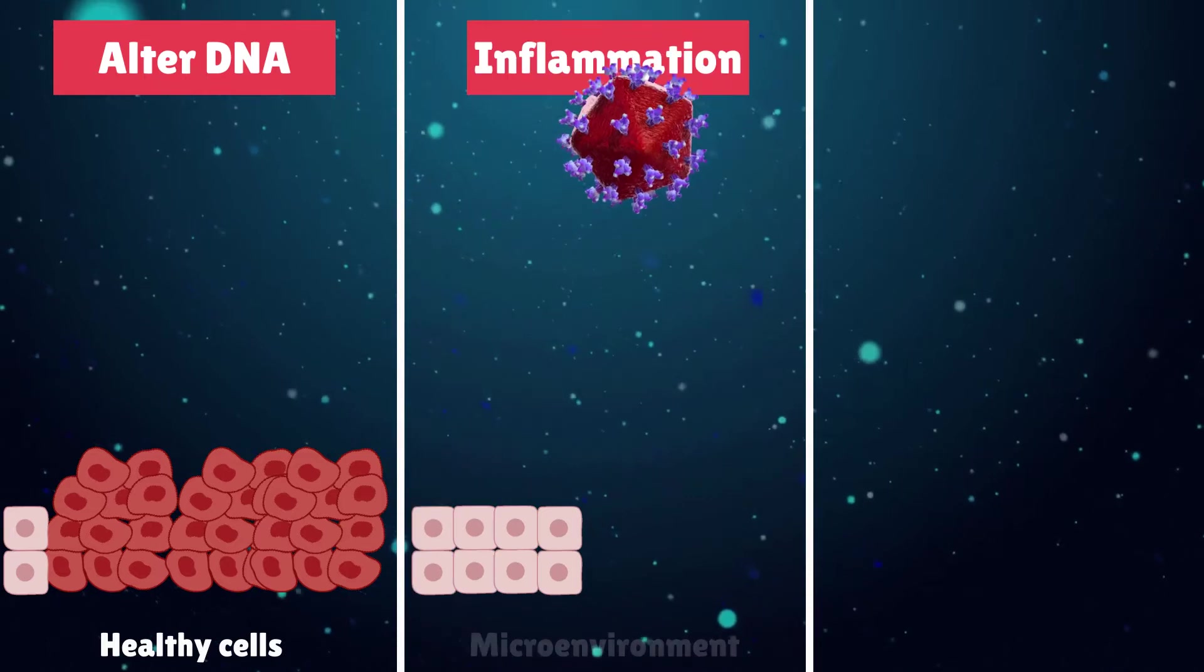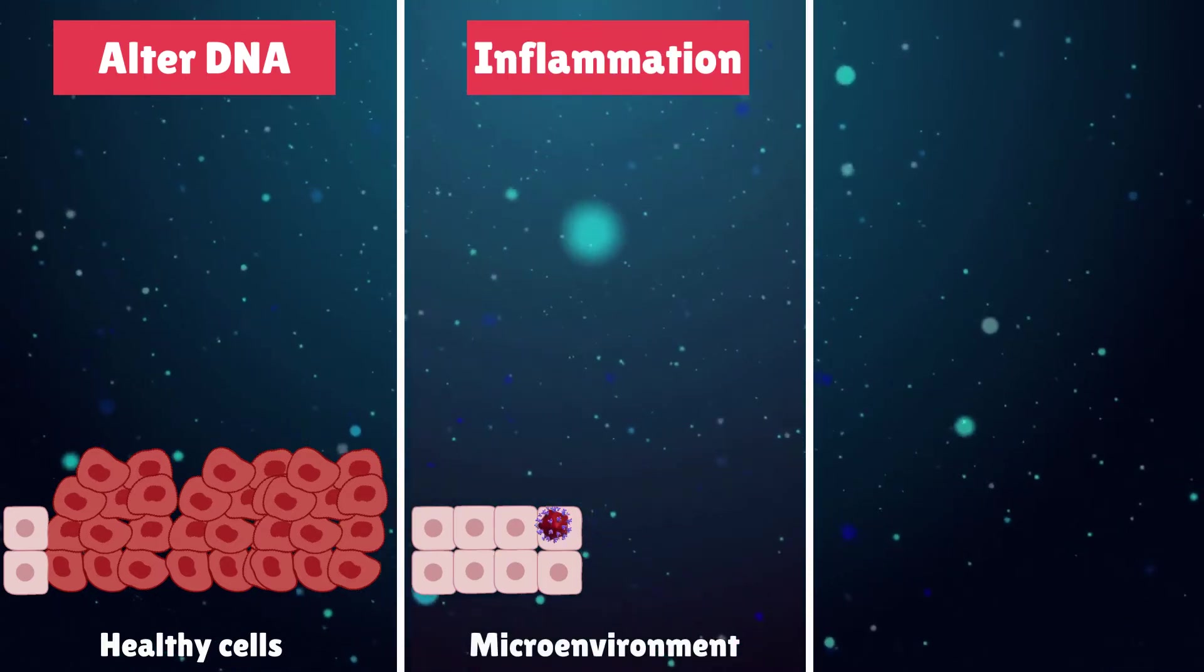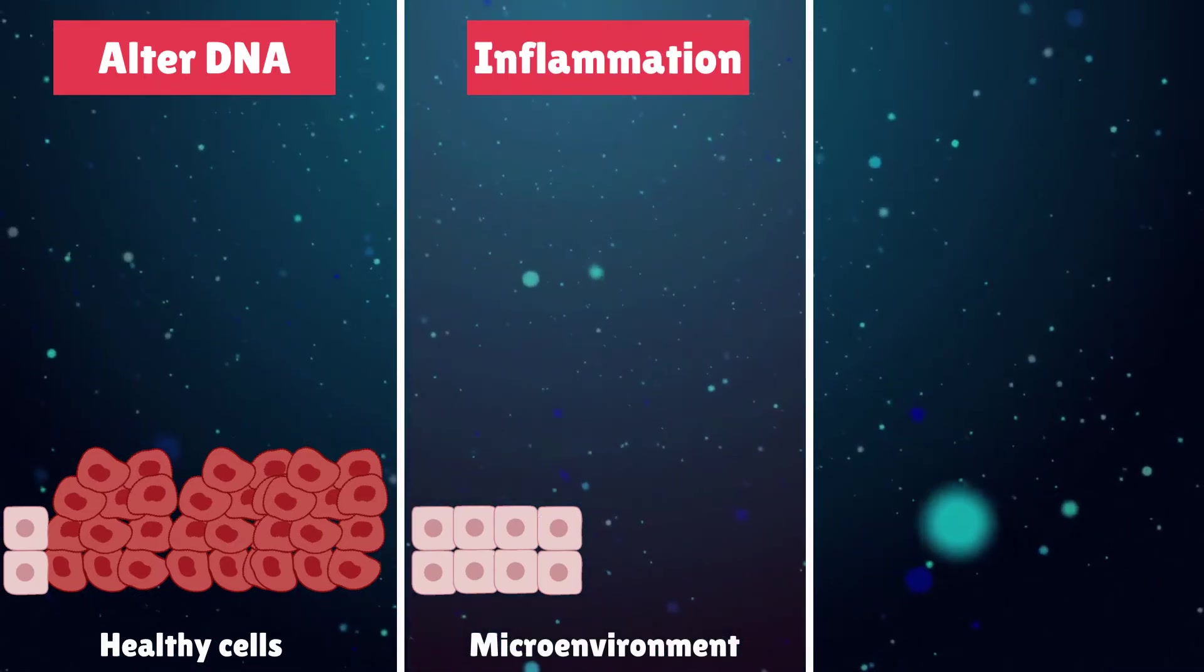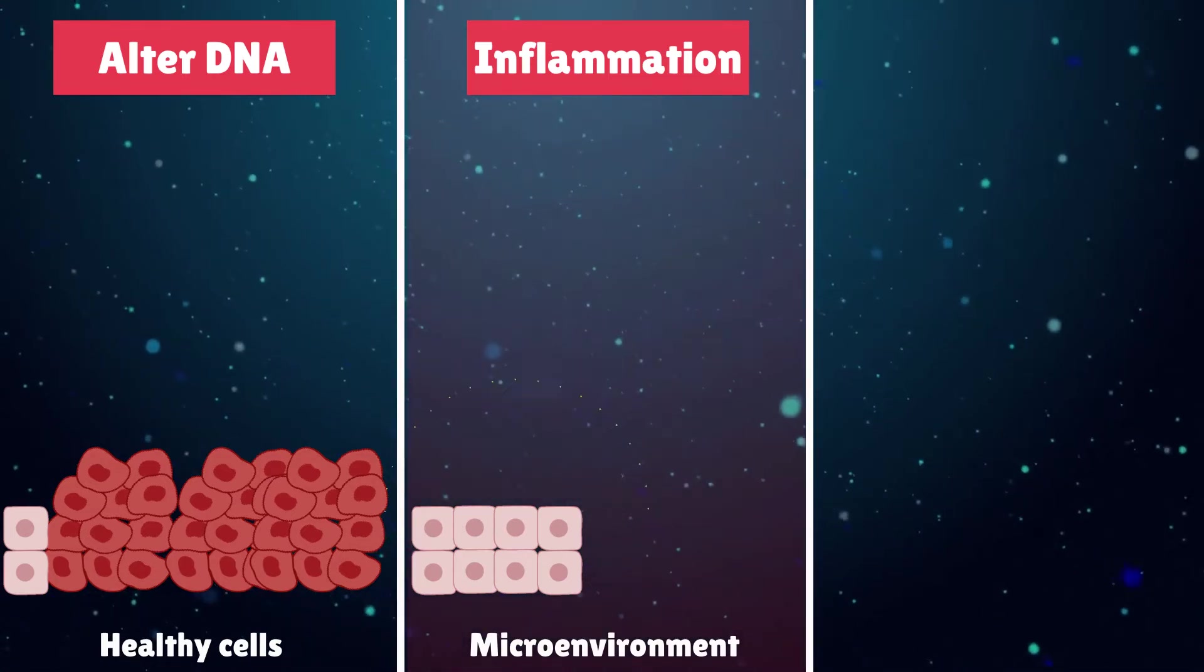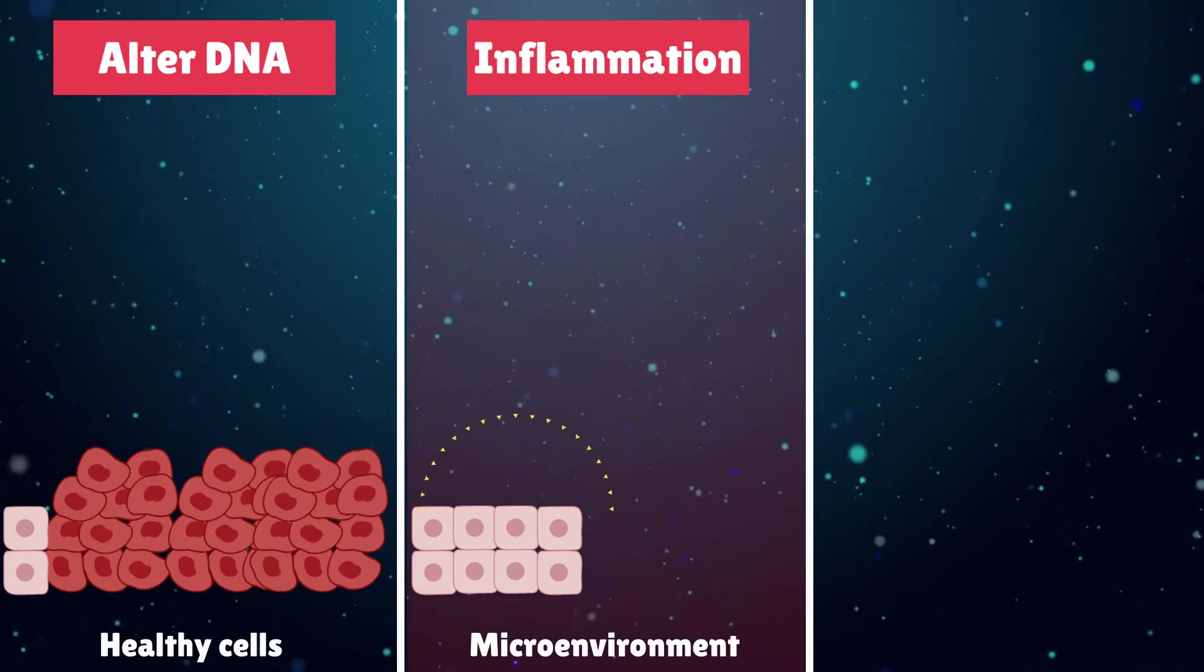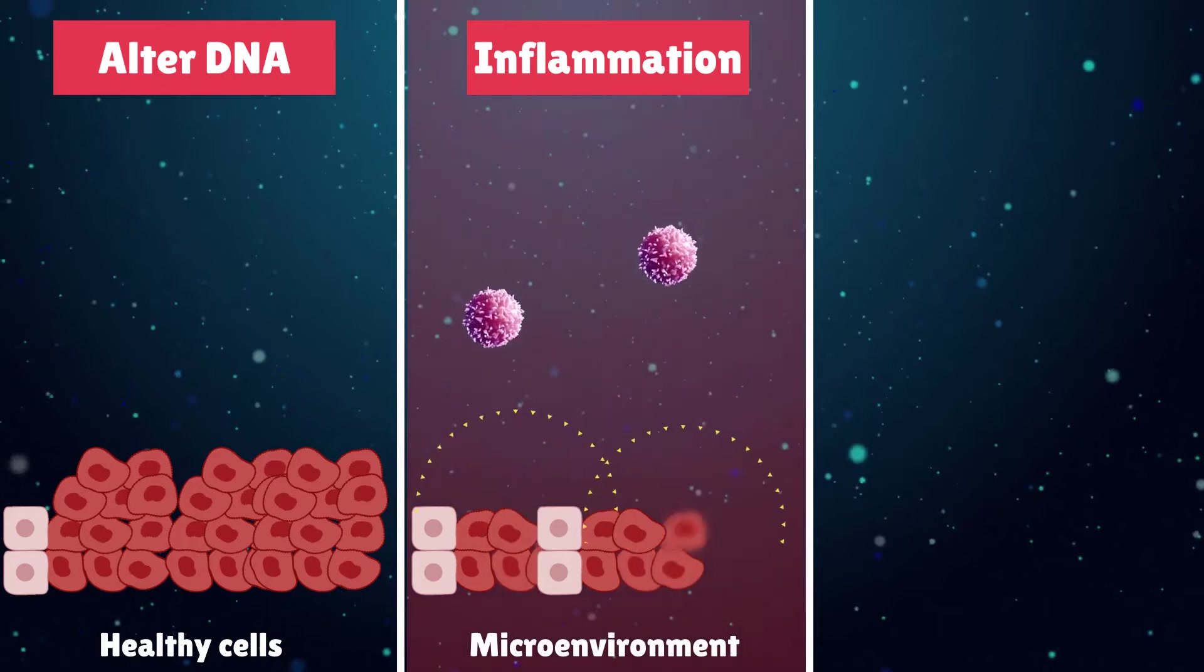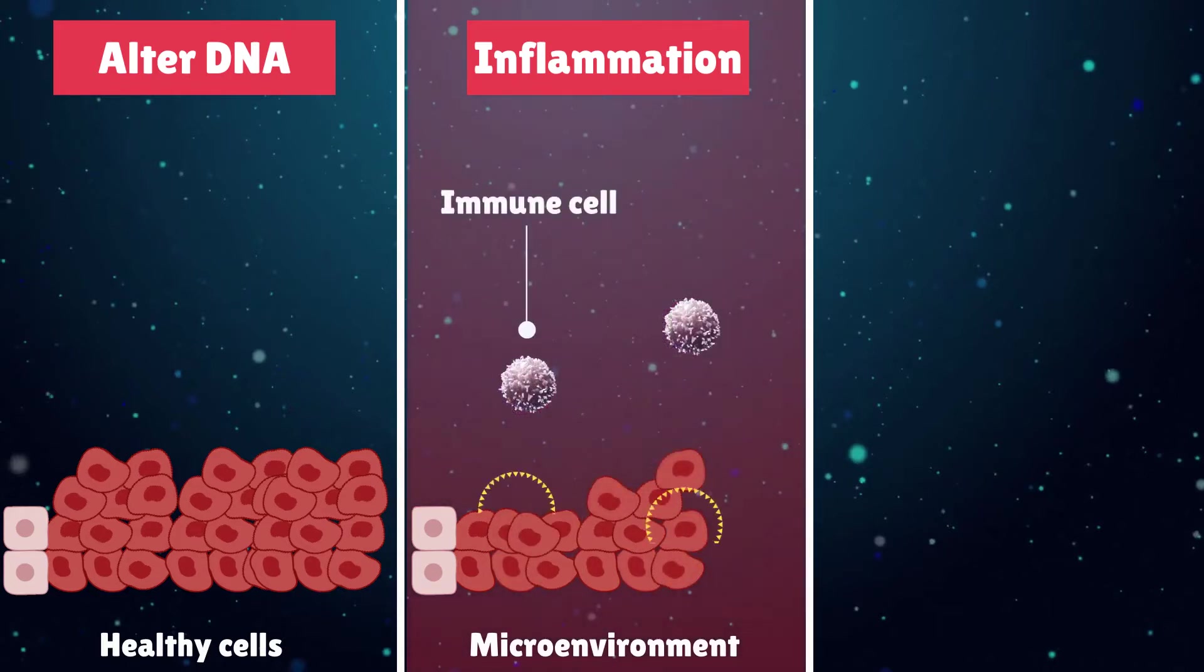Secondly, infectious agents can cause cancer indirectly through inducing chronic inflammation in the cellular environment, where the production of free radicals resulting from inflammation cause DNA, cell, and tissue damage. This can lead to functional changes in the affected cells and the nearby immune cells, rendering them unable to perform their biological roles efficiently, which can eventually allow cancer cells to go unchecked.